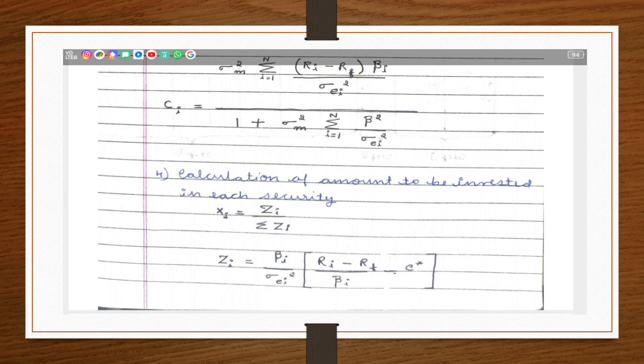Beta i is the expected change in the rate of return and beta i upon sigma Ei square. Sigma Ei square is the variance of stocks that is associated with the movement of market index.